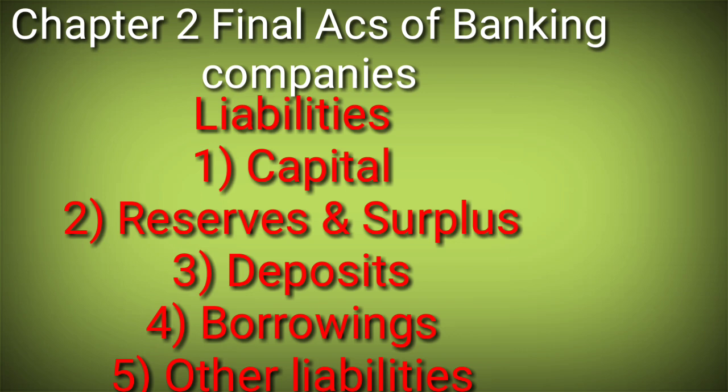Capital usually includes equity and preference shares - whatever type is given. In Reserves and Surplus, you write all reserves. In Deposits (Schedule 3), you write savings accounts, current accounts, and fixed deposits. In Borrowings (Schedule 4), you write borrowings from different other banks.